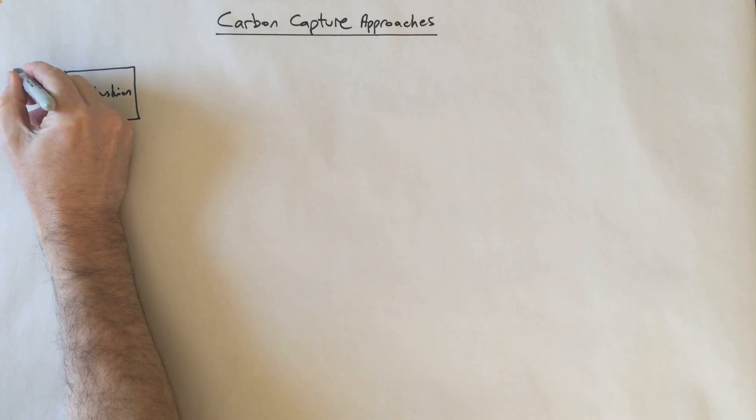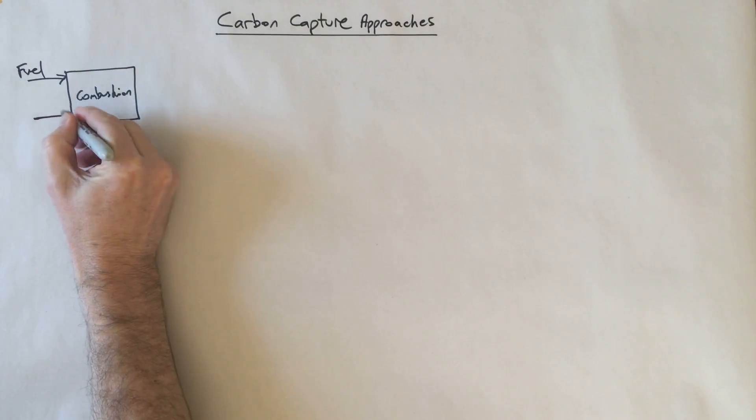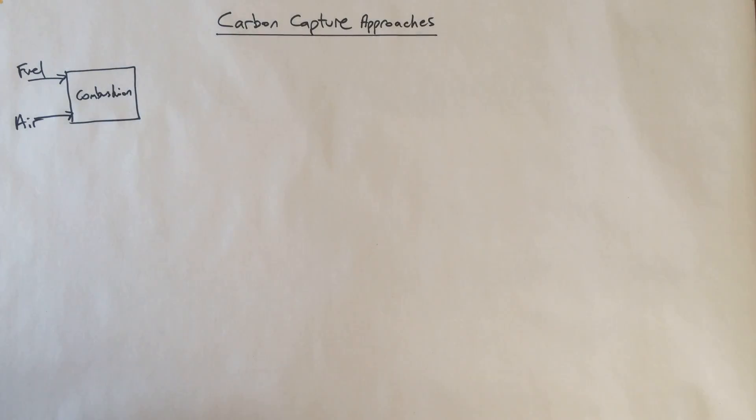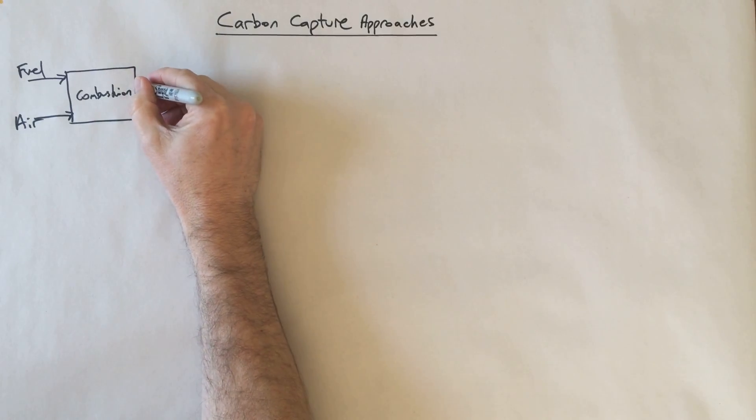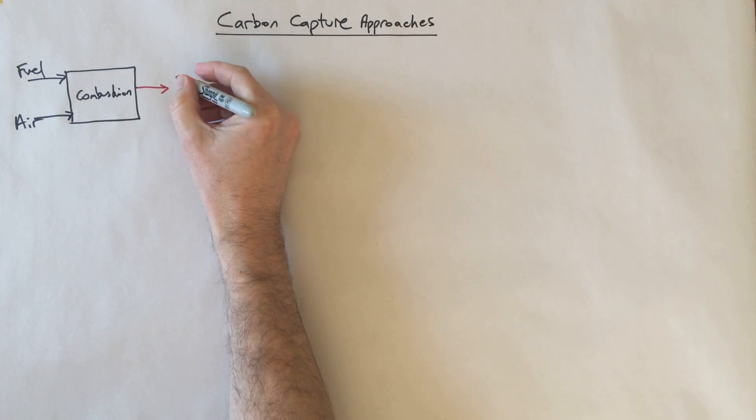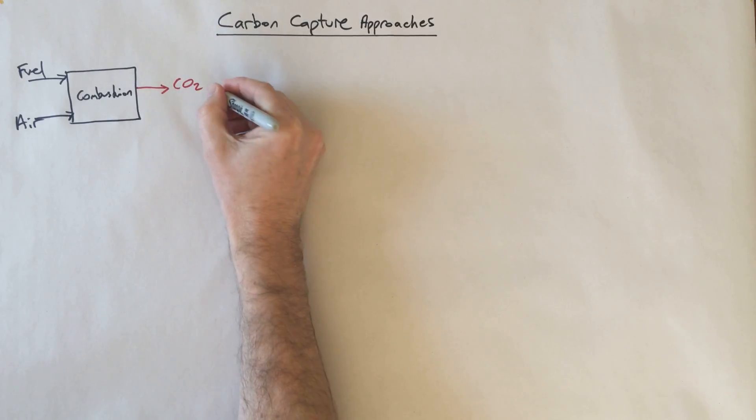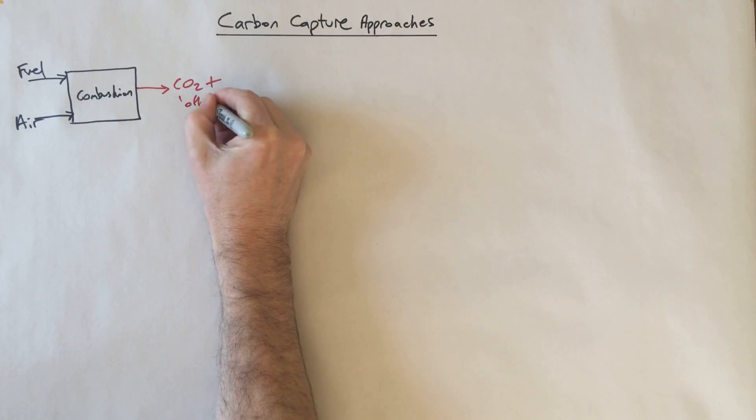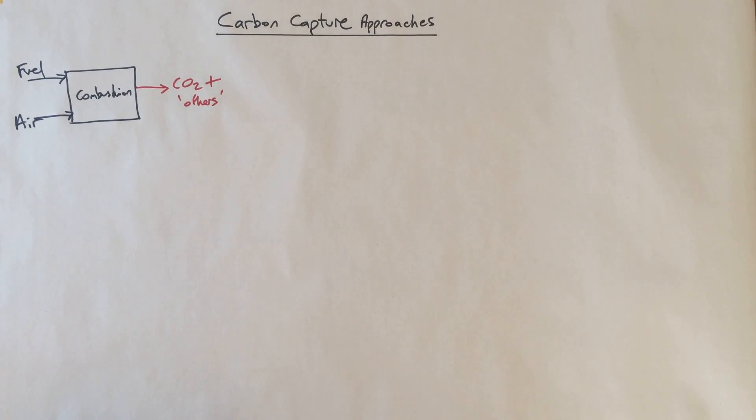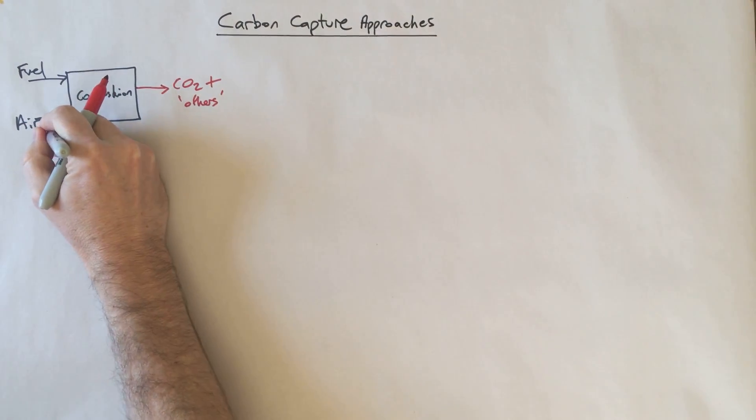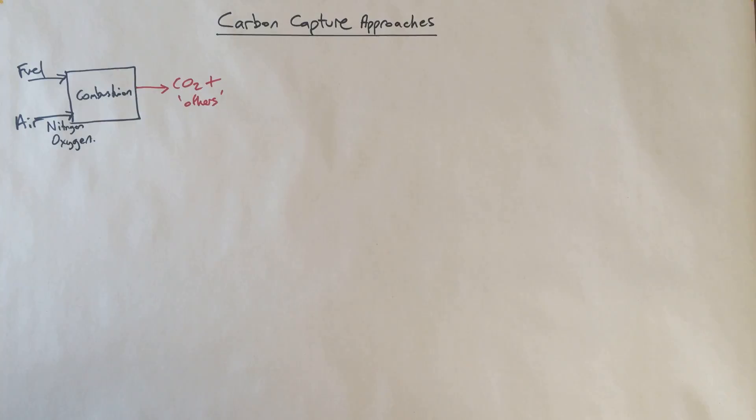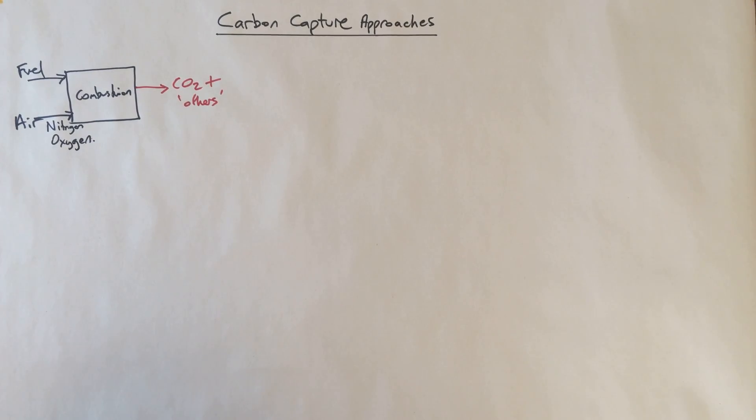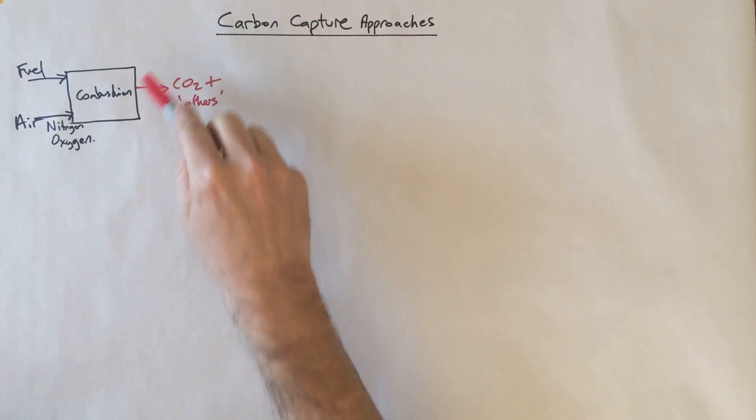If we take a situation where we've taken a fuel and put it in a boiler or furnace or some form of combustion, into that we've taken a fuel which contains carbon and we've taken some air. What we get out of that ultimately is we get some heat, which we could do something useful with. But for the purposes of this video, ultimately what we're getting is a CO2 plus others stream. Typically the other gas components in here would be nitrogen from the air.